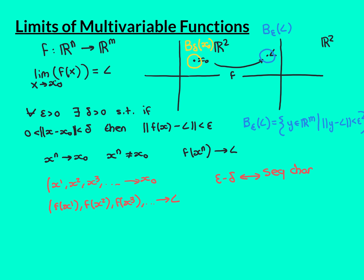If I can show that the terms of my original domain sequence eventually get within this delta ball, then all of their image points will be within this epsilon ball. From the analogous point in the image sequence, all of the terms will then be within the epsilon ball. I can do that because the domain sequence converges to x0, so there will exist a term such that it and everything beyond it is inside that delta ball.